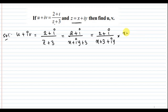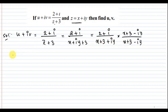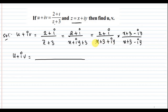So, multiplying by the conjugate, it is divided by x plus 3 minus iy in the denominator. The denominator becomes x plus 3 plus iy times x plus 3 minus iy. Applying the formula (a+b)(a-b) = a squared minus b squared, the denominator becomes x plus 3 whole square minus iy whole square.